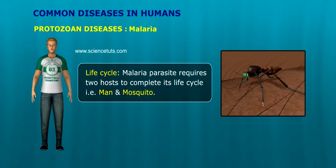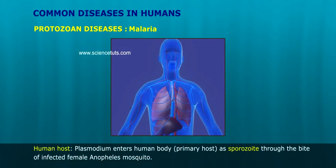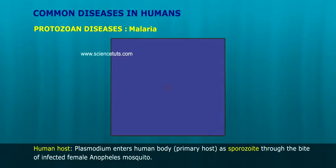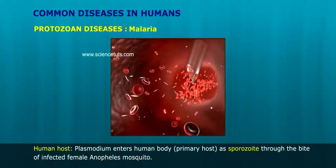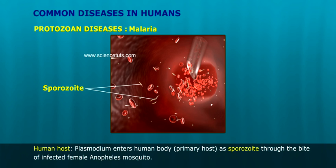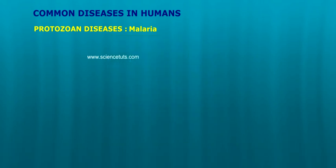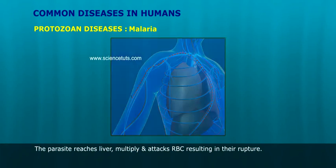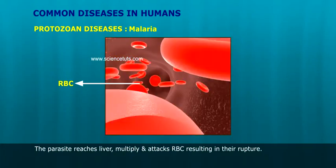Life cycle: The malaria parasite requires two hosts to complete its life cycle — man and mosquito. Human host: Plasmodium enters the human body through the bite of an infected female Anopheles mosquito. The parasite reaches the liver, multiplies, and attacks red blood cells (RBCs).